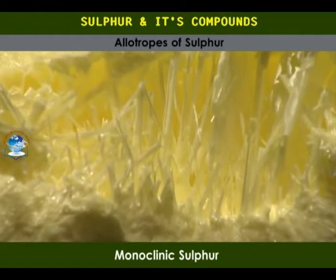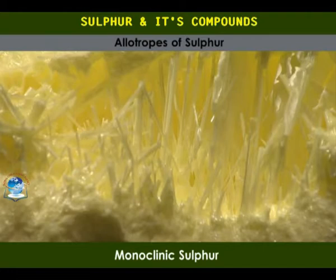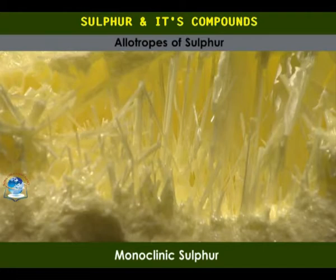Below 96 degrees Celsius, crystalline sulfur exists in the rhombic form, and above 96 degrees Celsius it exists in the monoclinic form. The temperature of 96 degrees Celsius is in this case called the transition temperature.